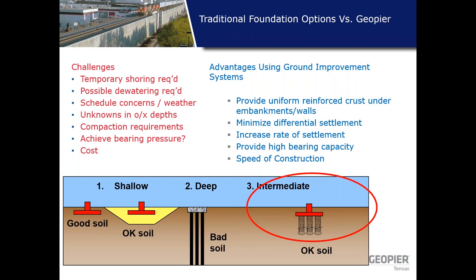Ground improvement also minimizes differential settlement along the length of the project. GeoPier elements are high-stiffness inclusions that attract more stresses. Being made of gravel, they increase the rate of consolidation in the matrix soils, especially if the soil consists of clay, by providing radial drainage. They provide high bearing capacity due to significant improvements in the mechanical properties of the soil, and offer speed of construction — because GeoPier is made of gravel, weather delays do not cause significant project delays. This option has become the number one preferred option for many design-build projects.